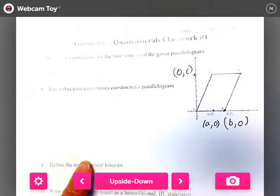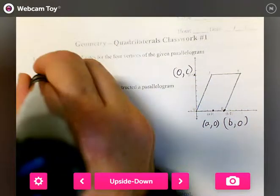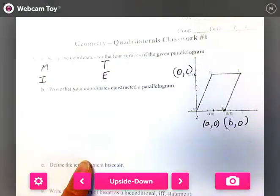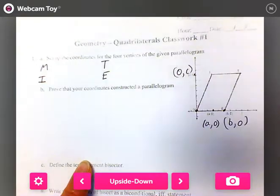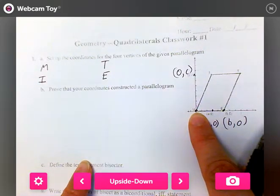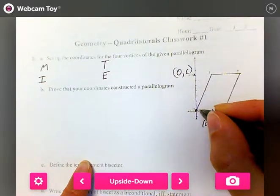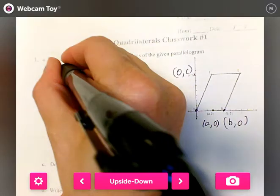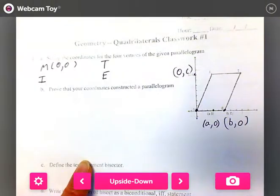We want to know what points M, I, T, and E are. Right here, this is M. Can somebody tell me what you think the coordinates are for M? Give me a guess. What is the X coordinate, what's the Y coordinate for it? 0, 0. Good. You guys were super nervous about it. It's just 0, 0.